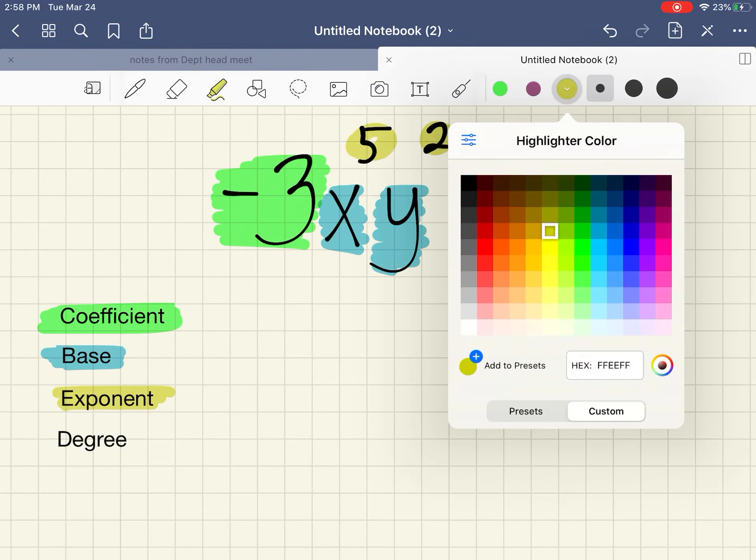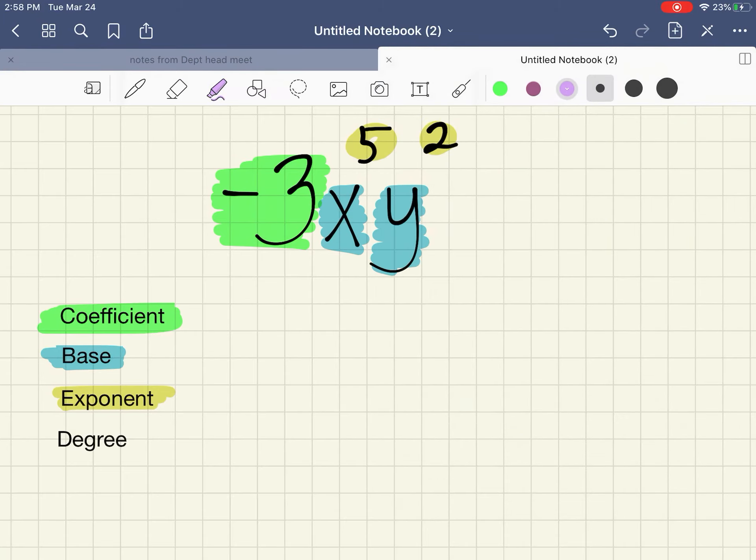And the last piece, which we won't spend much time on, is the degree. Now to find the degree, we're going to take the exponents and add them together. So 5 plus 2, which is 7. So the degree of that monomial is 7.